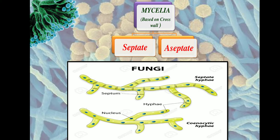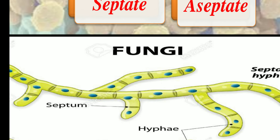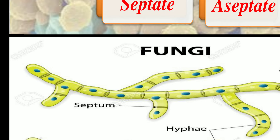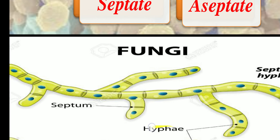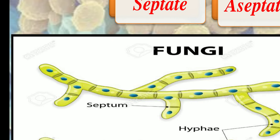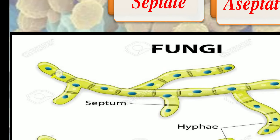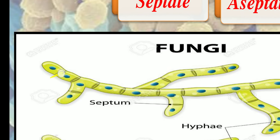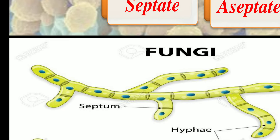The cross wall is called a septum. The internal cross wall present in the hyphae of fungi is called a septum. In a multicellular fungi, between each cell there is a septum present — a cross wall which we call a septum.